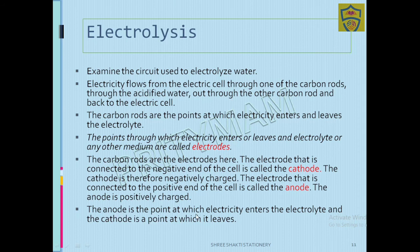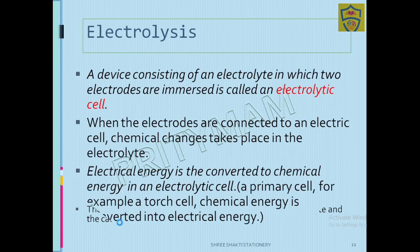The anode is the point at which electricity enters the electrolyte, and the cathode is the point at which it leaves. At the positive end, electricity enters; at the negative end, electricity exits.